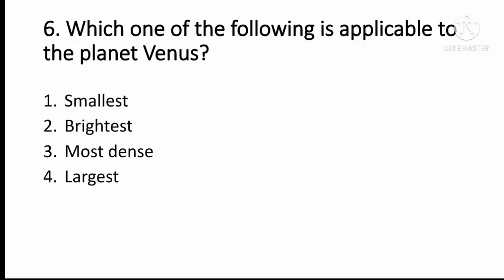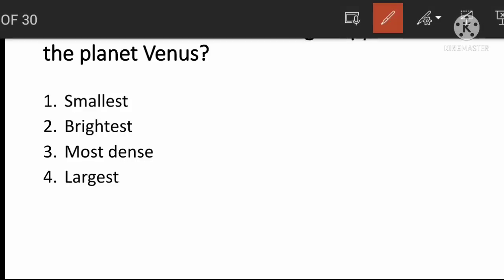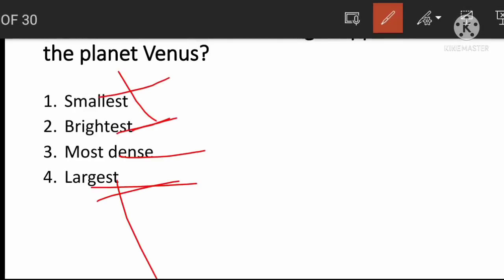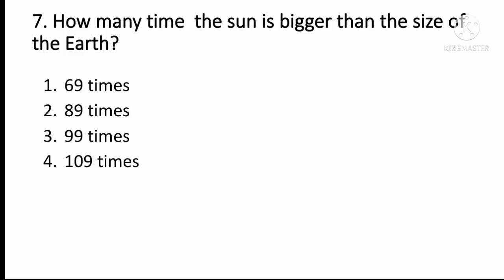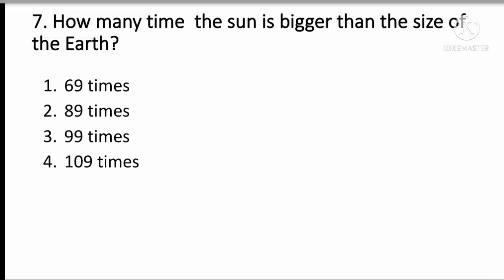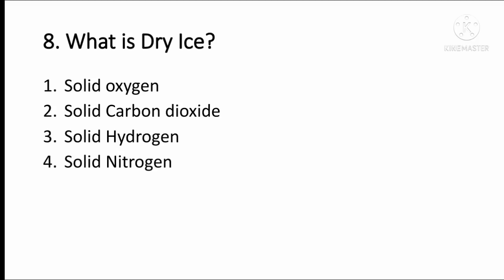The following is applicable to the planet Venus. How many times is the sun bigger than the size of the Earth? What is dry ice? Dry ice is solid carbon dioxide.